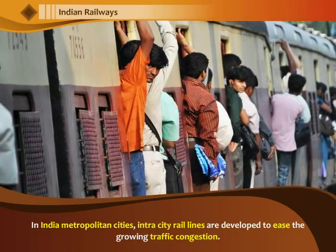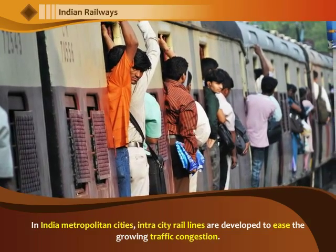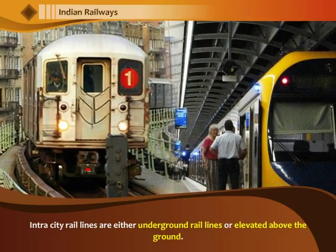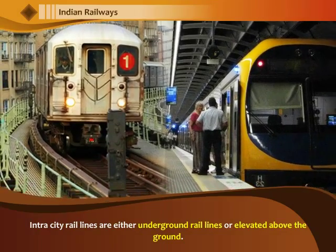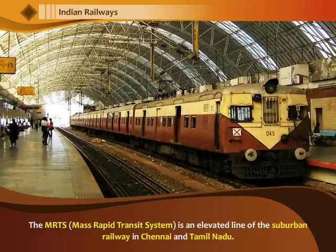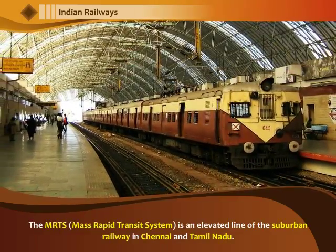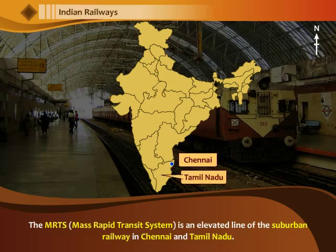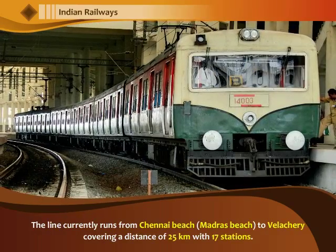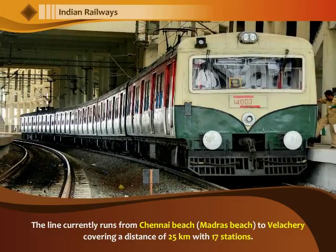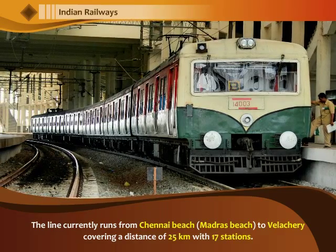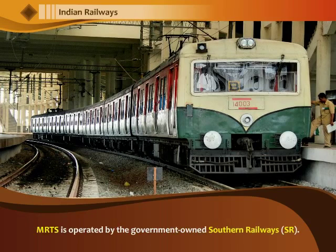In India, metropolitan cities have intra-city rail lines developed to ease the growing traffic congestion. These rail lines are either underground or elevated above the ground. The MRTS, or Mass Rapid Transit System, is an elevated line of the suburban railway in Chennai, Tamil Nadu. The line currently runs from Chennai Beach to Vela Cherry, covering a distance of 25 km with 17 stations. MRTS is operated by the government-owned Southern Railways.